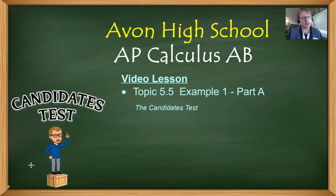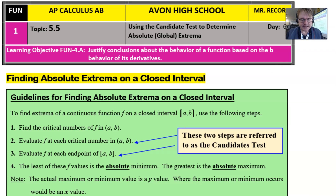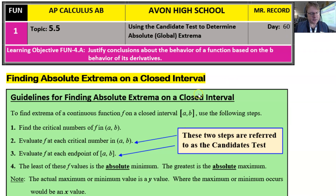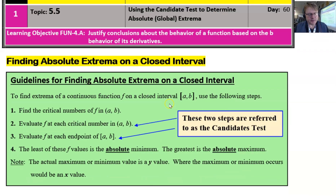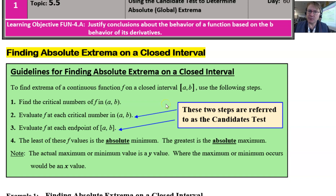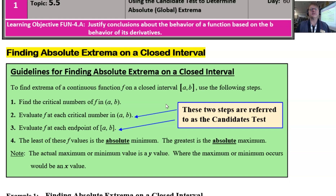They're two very similar things, but they accomplish a couple of different tasks. So let's dive right in. From the notes here from Avon High School, I start off with this vibrant green box that outlines the guidelines for finding absolute extrema. Now let's understand the difference: absolute extrema versus relative extrema.